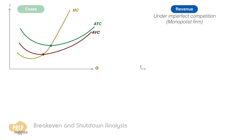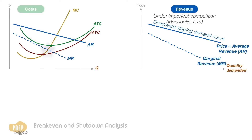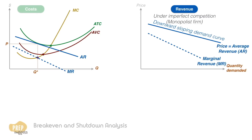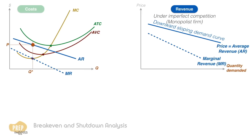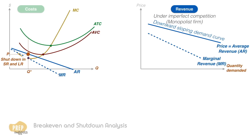Now let's look at the situation under imperfect competition, using a monopolist firm as an example. The demand curve for a monopolist is downward sloping, and this demand curve is the average revenue curve as well. The marginal revenue curve will be a steeper downward sloping curve that can go below zero at certain output levels. The profit maximizing output is where MC equals MR. To check if the firm is making a profit, we check if average revenue is higher than average total cost. If the demand curve barely touches the ATC curve, that is the break-even point. If the intersection point goes below AVC, the firm should shut down in both the short run and long run.